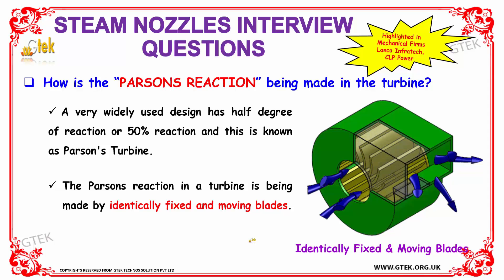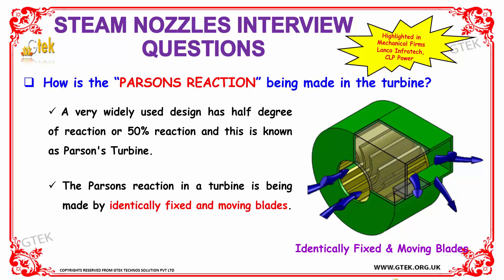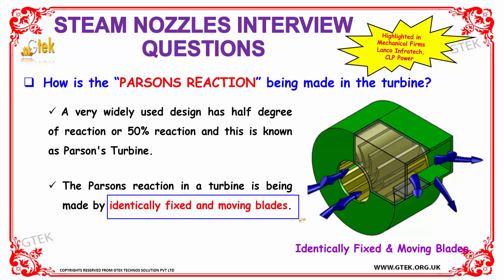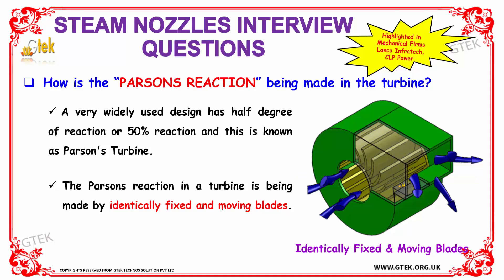How is the Parsons reaction made in the turbine? A very widely used design has a half degree of reaction, or 50% reaction, and this is known as the Parsons turbine. The Parsons reaction in a turbine is made by identically fixed and moving blades.